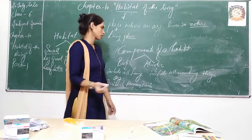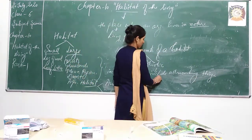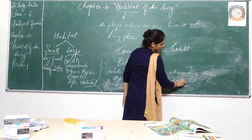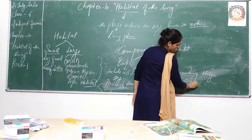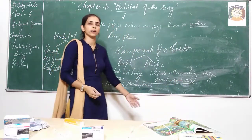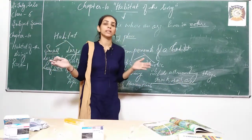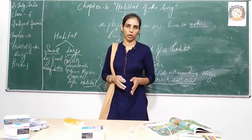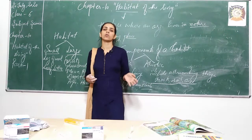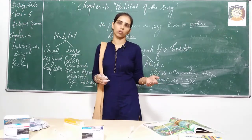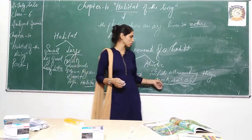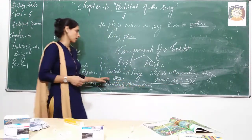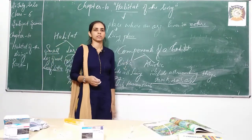Non-living things could be, for example, rock, soil, and air — all these things are non-living, but they form the component of the habitat, meaning they are part of a habitat. Because in a habitat you cannot survive without air. So rock, soil, and air are all abiotic components, and living organisms are called biotic components.